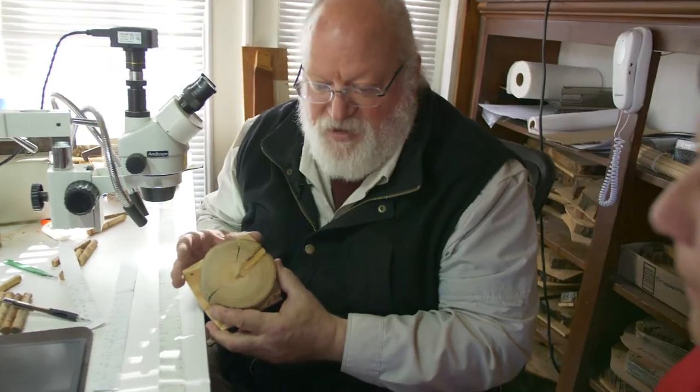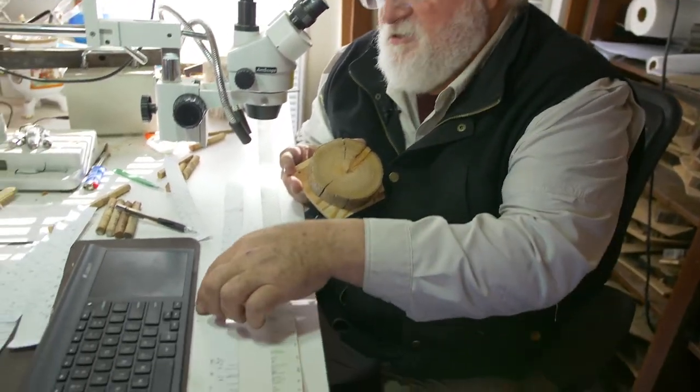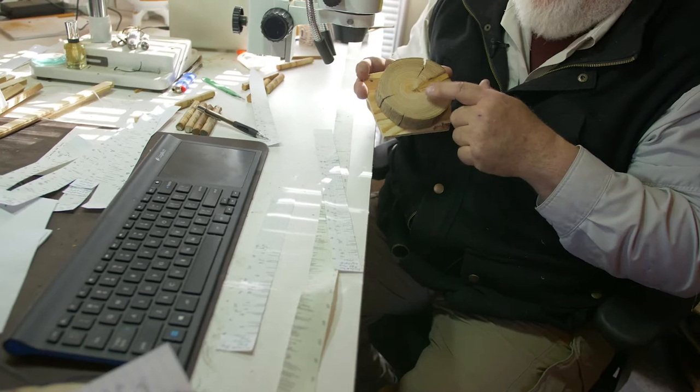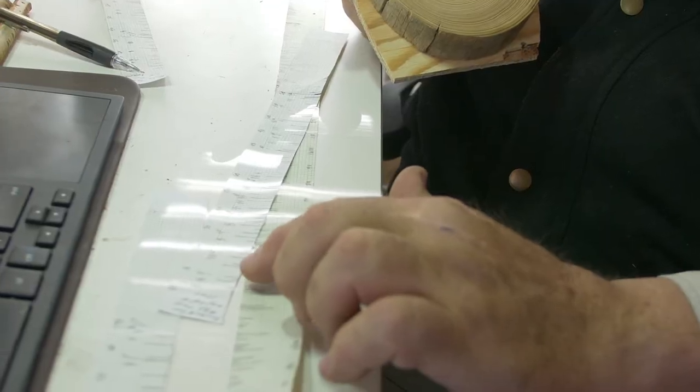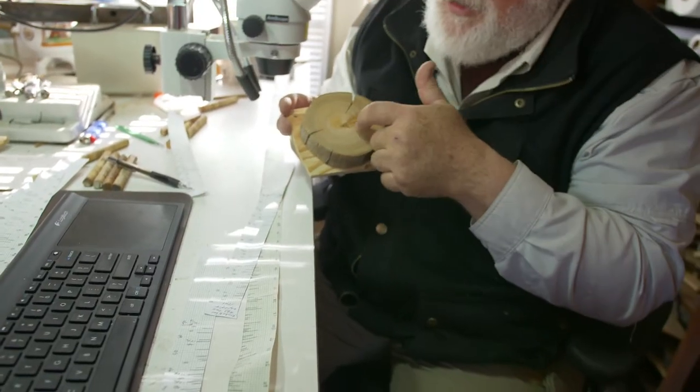And what I do is I take my sample, like this one, and I look at the ring pattern. I'm looking for the wide and narrow rings, and I make another plot like this one from the sample. And basically, I draw a line, a pencil line, for every small ring, every narrow ring that I see here.